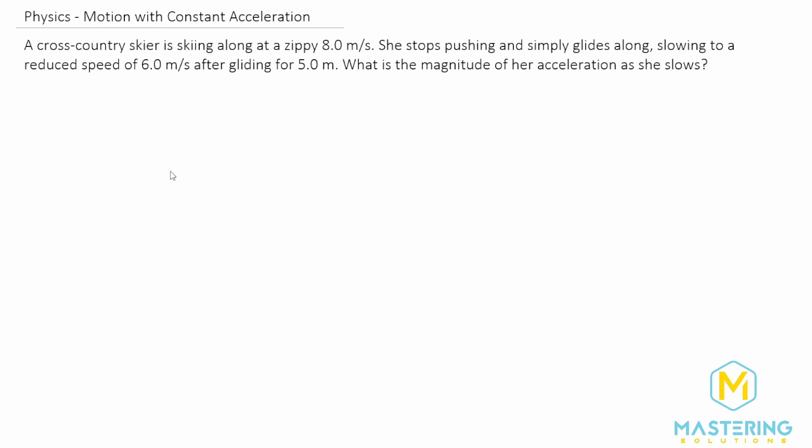Welcome to Mastering Solutions. In this acceleration problem, they talk about a cross-country skier and they say that she's going along at 8 meters per second. She stops and just simply glides along, slowing to a reduced speed of 6 meters per second after going for 5 meters.